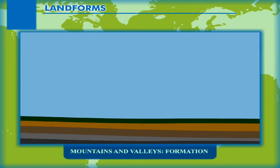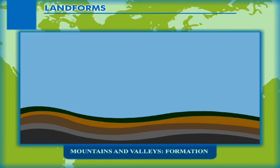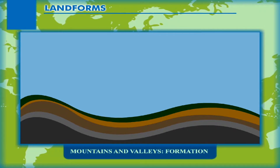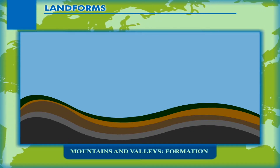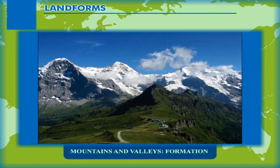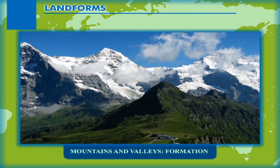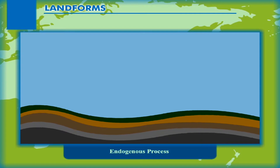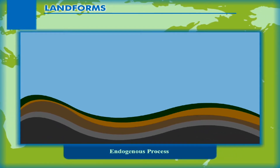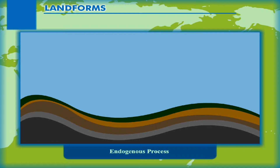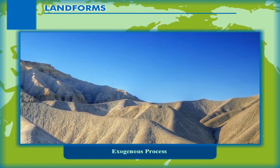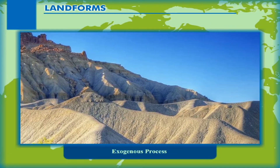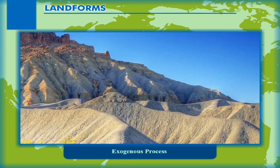Mountains and Valleys Formation. A landform is the natural feature of rugged, raised land or depressed land, like mountains, hills, valleys, plateaus, etc. These landforms are made by two processes: (a) Endogenous process — that operates inside the earth, leading to the upliftment and sinking of the earth's surface at several places; and (b) Exogenous process — that operates on the surface of the earth, involving the continuous wearing down and rebuilding of the earth's surface.